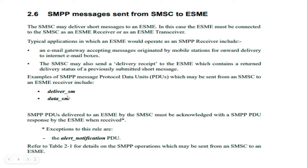All messages have a response, with one exception: alert notification has no response. Alert notification is used to indicate the status of a mobile station. For example, if a mobile was switched off and you could not deliver an SMS, when that mobile station comes back up, an alert notification message is sent to inform the ESME that the mobile station is now available, and you can redeliver your message.